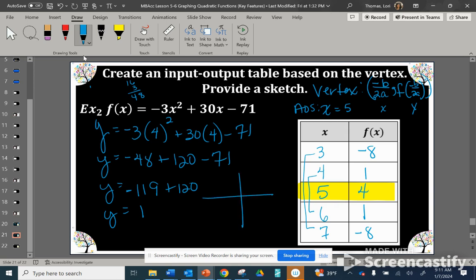Let's do a quick sketch. Our graph turns down. Here's our axis of symmetry, x equals 5. Then we have 4 comma 1 and 6 comma 1, equally one unit on either side of the AOS. Then we have 3 comma negative 8 and 7 comma negative 8. We can see our graph forming the parabola.